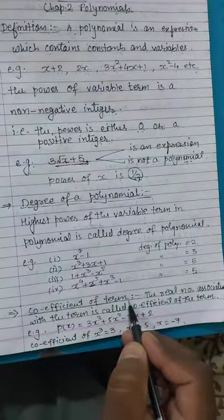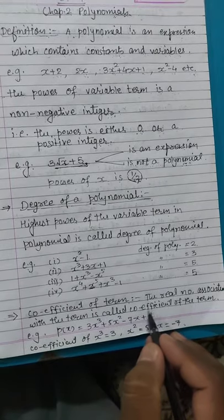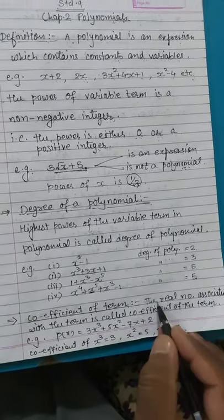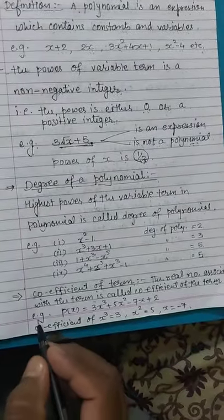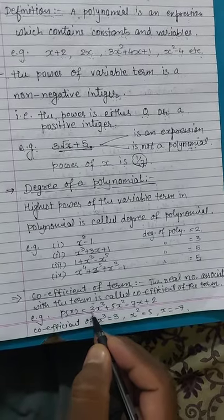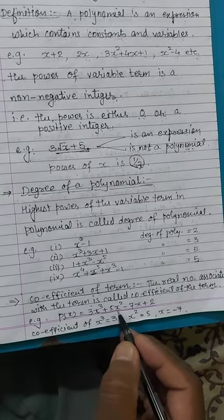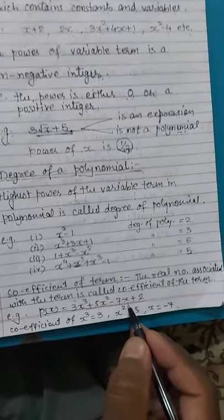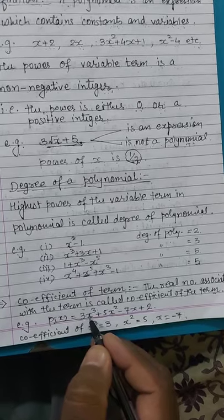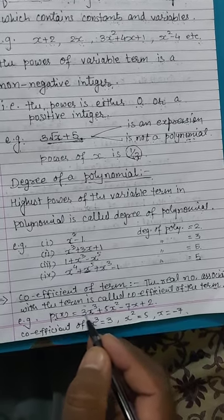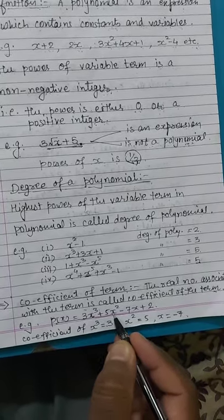Next: coefficient. The real number associated with a term is called the coefficient of that term. As an example, let us take the polynomial p(x) = 3x cubed plus 5x squared minus 7x plus 2. The real number associated with x cubed is 3, so the coefficient of x cubed is 3. The coefficient of x squared is 5.